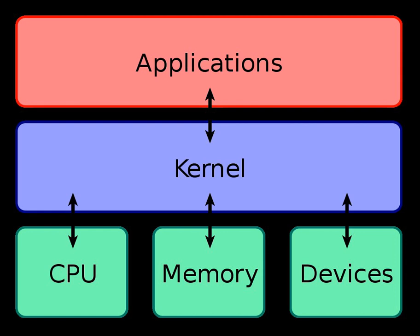The kernel has full access to the system's memory and must allow processes to safely access this memory as they require it. Often the first step is virtual addressing, usually achieved by paging and/or segmentation. Virtual addressing allows the kernel to make a given physical address appear to be another address — the virtual address. Virtual address spaces may be different for different processes, so memory accessed at a particular address by one process may differ from what another process accesses at the same address. This allows every program to behave as if it is the only one running, thus preventing applications from crashing each other.